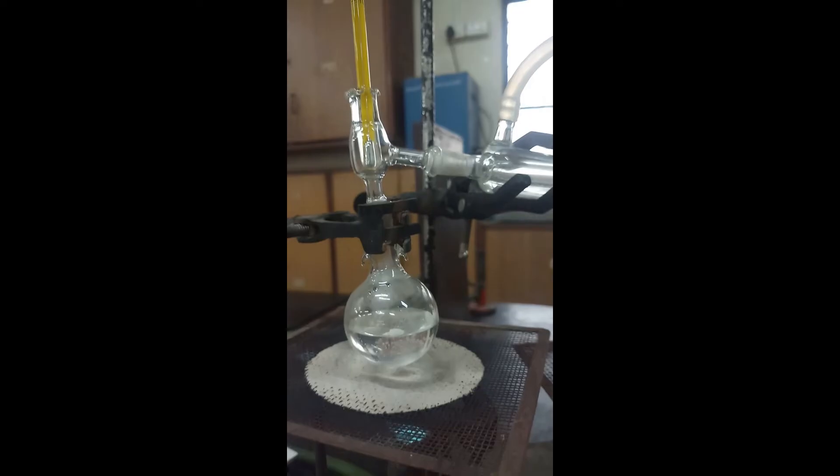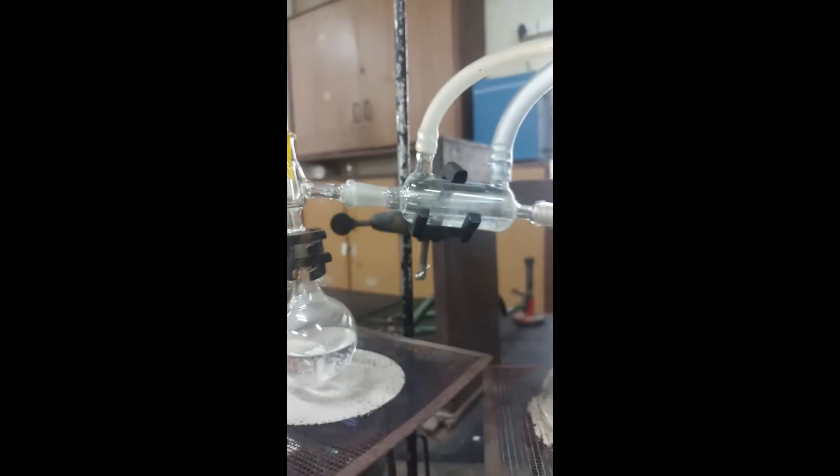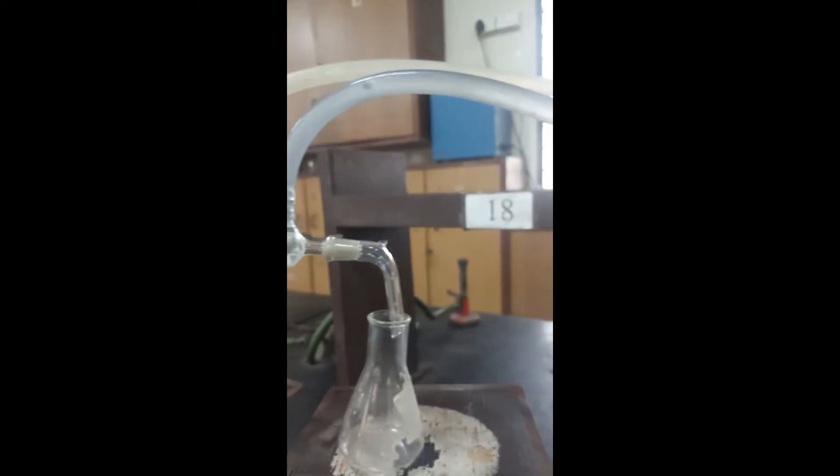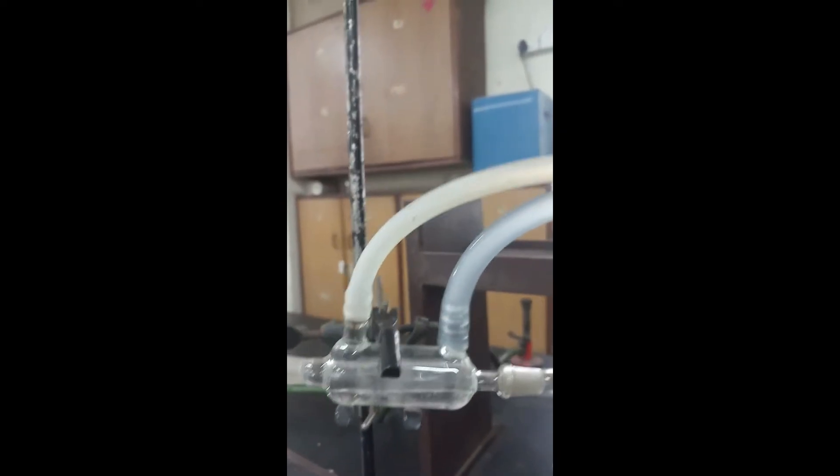This is the entire setup assembly for the distillation unit. This is the pipe for water circulation through the condenser. This is the inlet pipe, whereas the outlet pipe for circulating cold water for condensation.